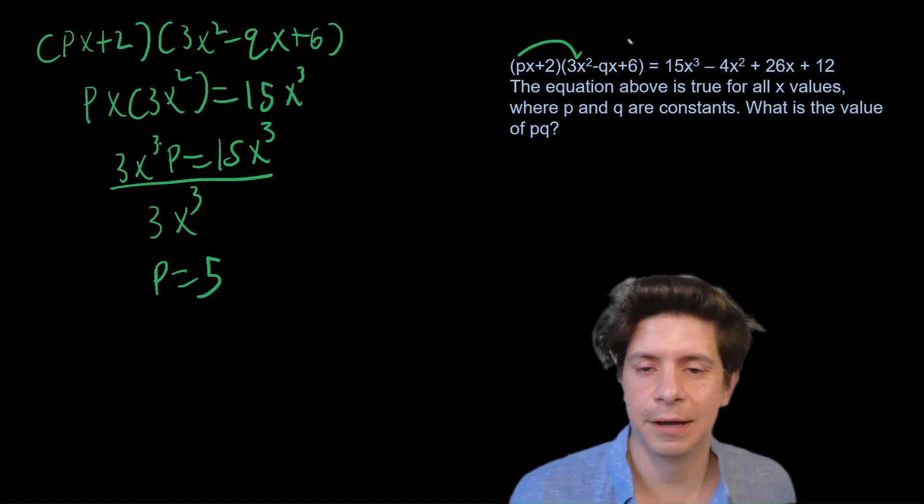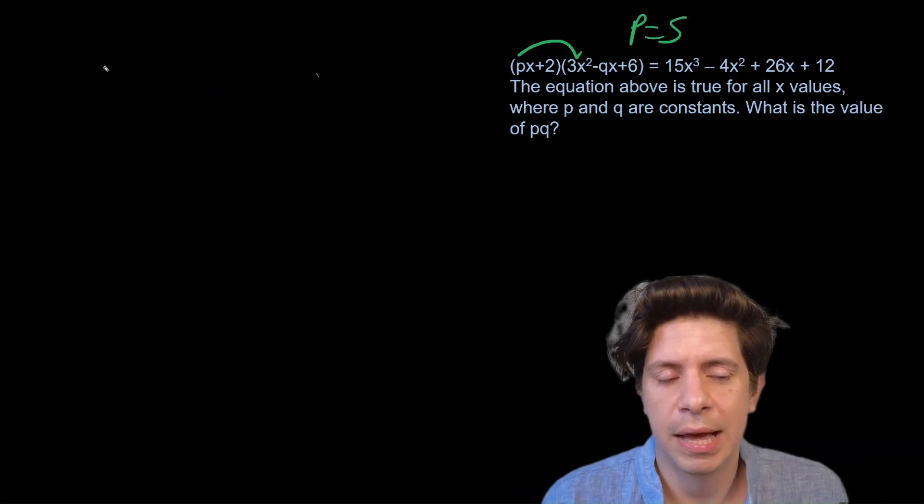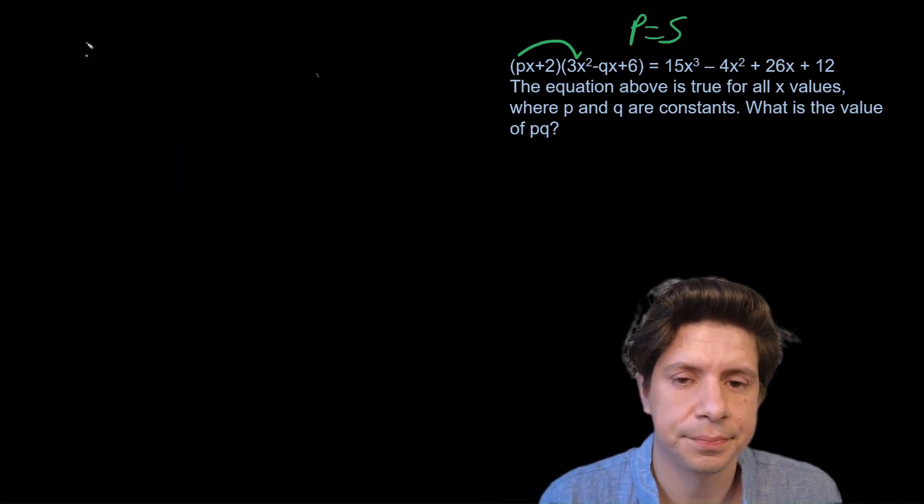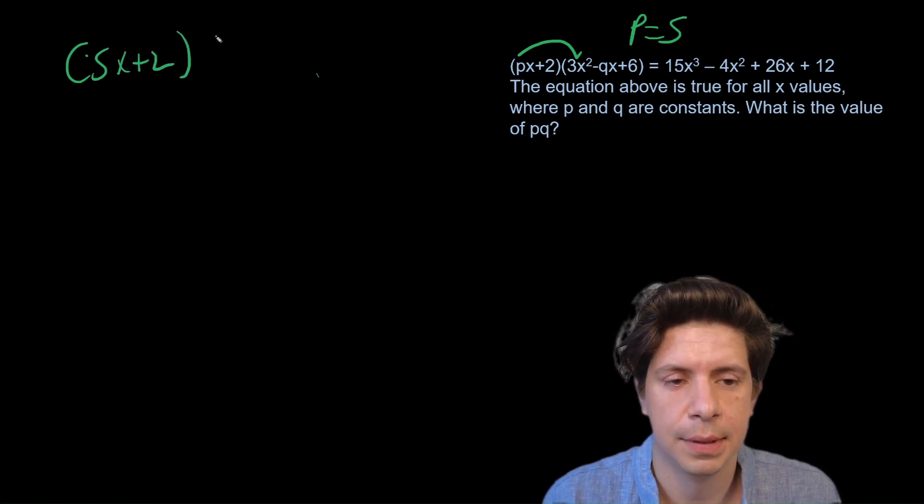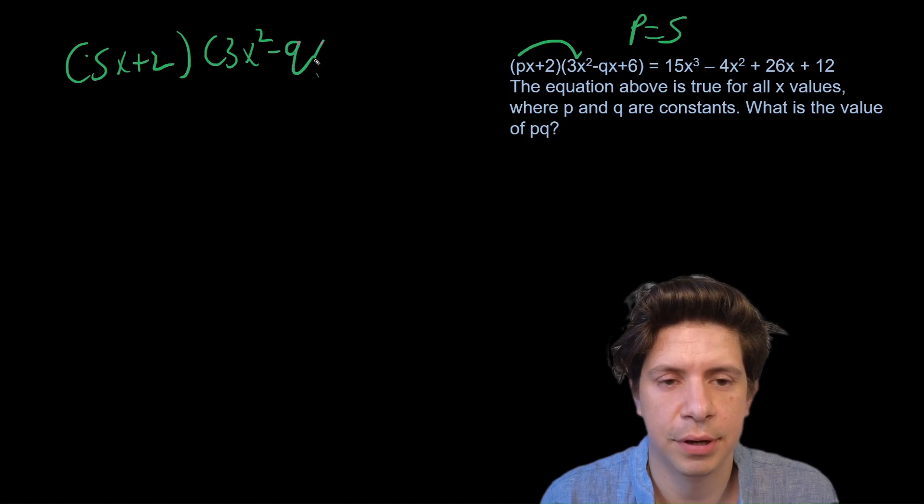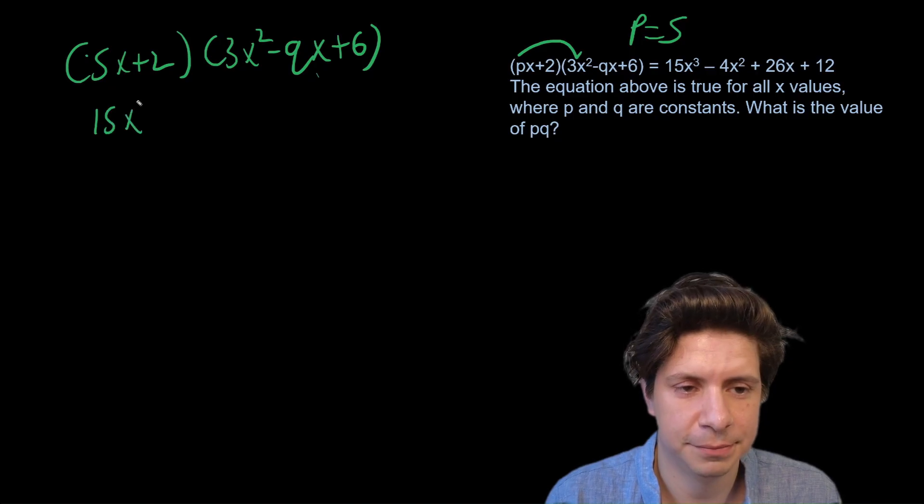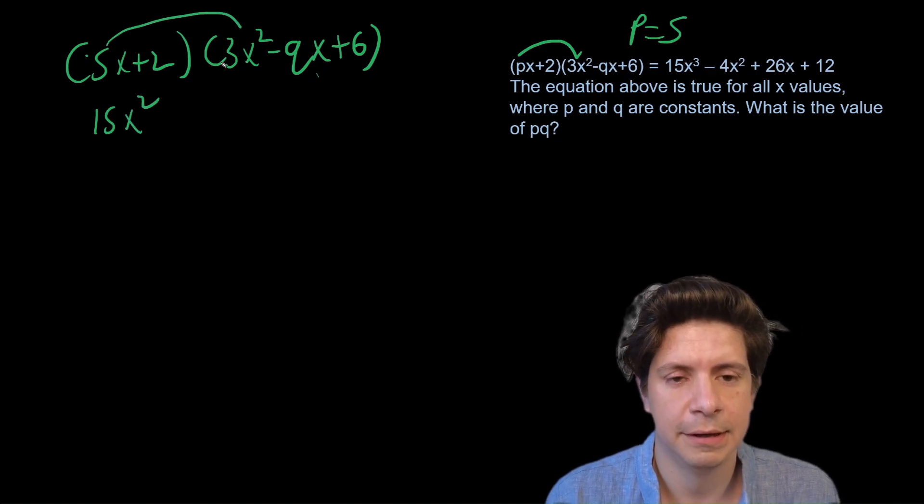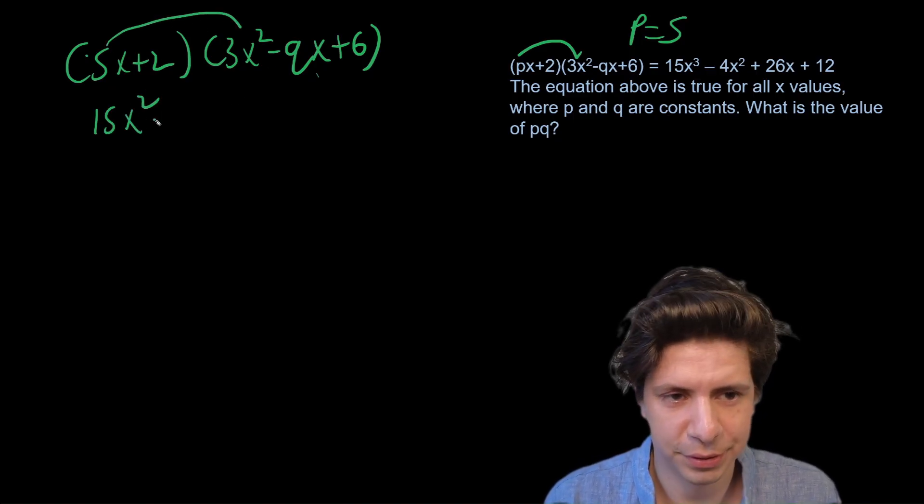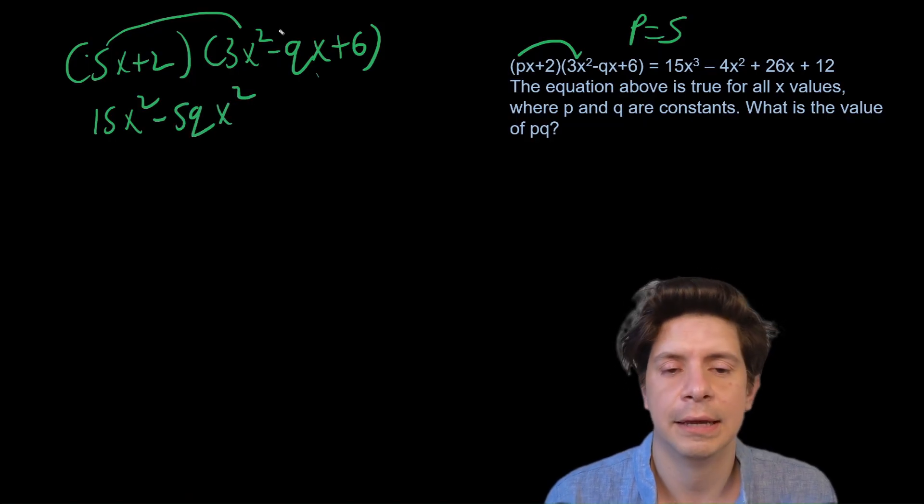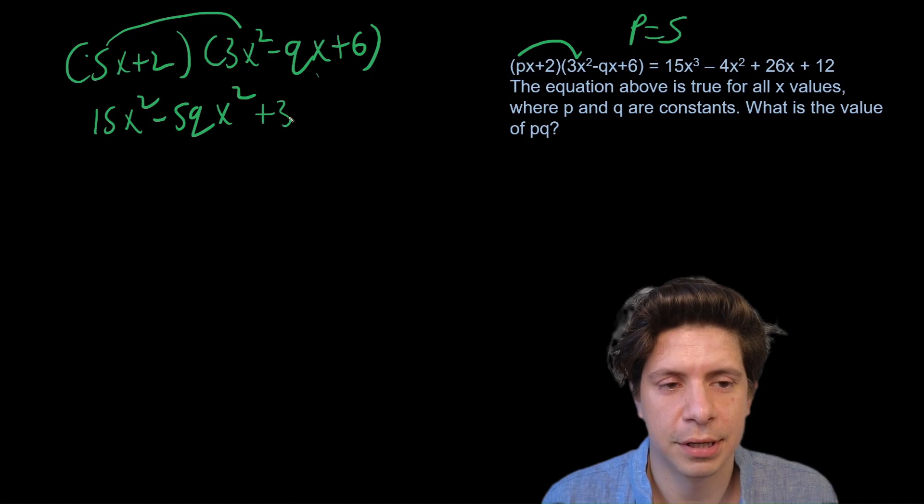Okay, so that part is done. Let's rewrite the equation now with p equaling 5. I'll put that up here as a reminder. So we'll have now (5x+2) times (3x²-qx+6). So 5x times 3x² will be 15x². 5x times -qx will be -5qx². 5x times 6 is 30x.